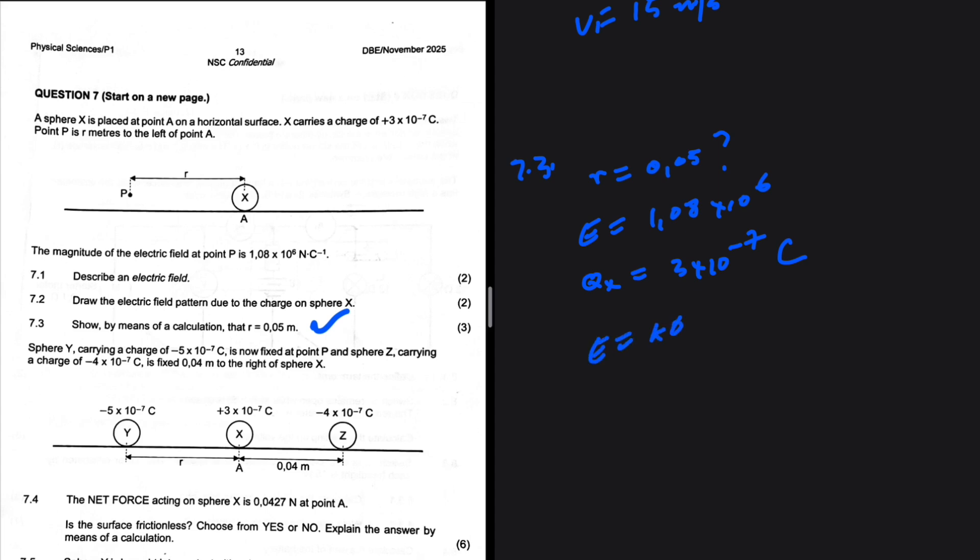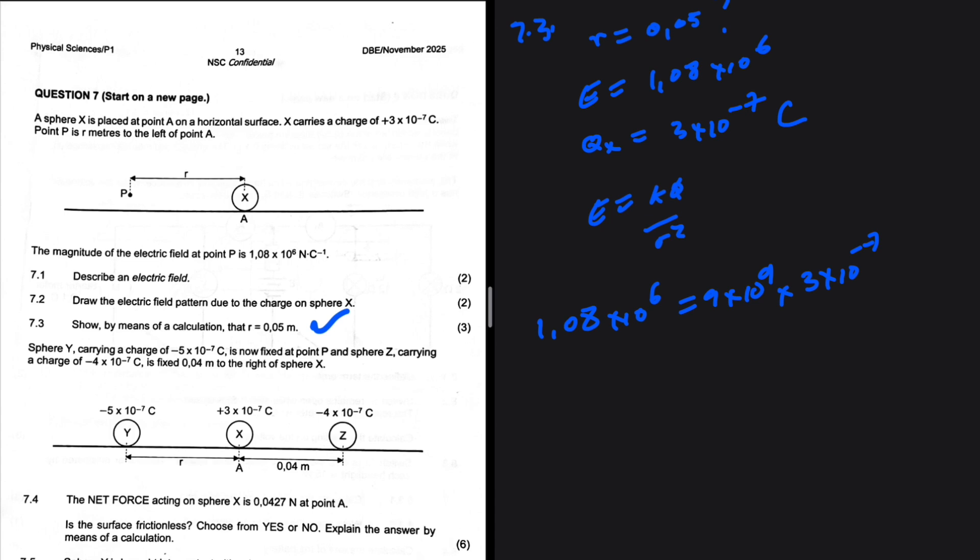7.3: E equals kq over r squared. Why are we picking this formula? It's not that it's our favorite, we have the variables that we have and it's the variables that decide which formula we use. So 1.08 times 10 to the power 6 equals 9 times 10 to the power 9, k is a constant, multiplied by 3 times 10 to the minus 7 divided by r squared.